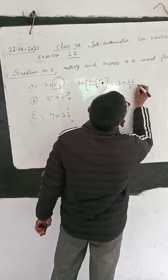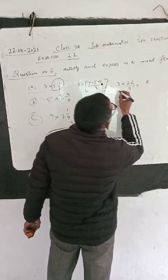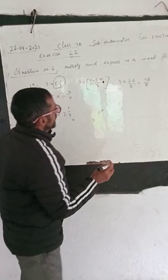3 times 6 is 18. 3 times 2 is 6 and 7 divided by 5. Now we have multiplied by this number. Now we will change it into mixed fraction.